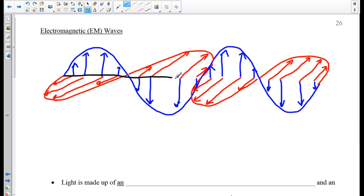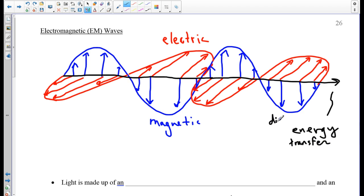Finally, let's draw a black line representing the direction in which energy is transferred. So blue is magnetic, red is the electric field or the electric force field, and the black here is the direction of energy transfer or direction of energy transfer.